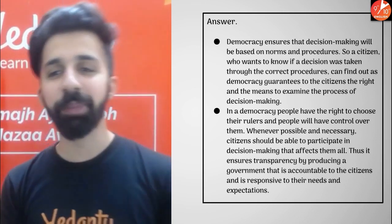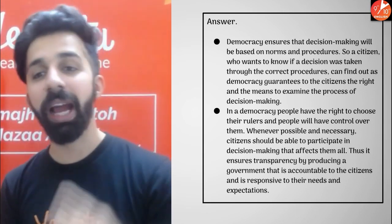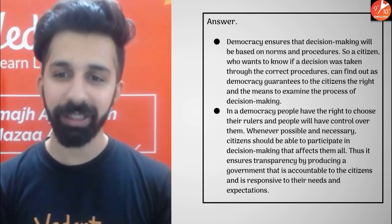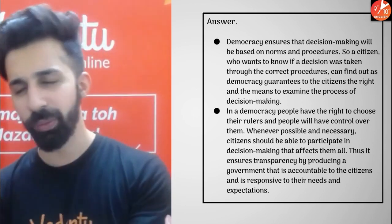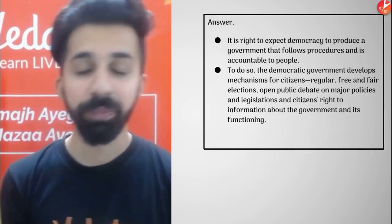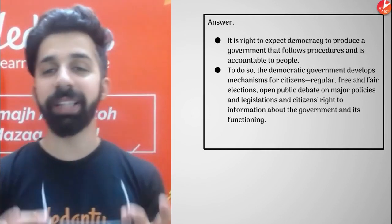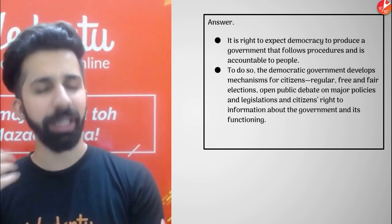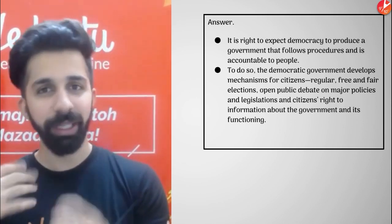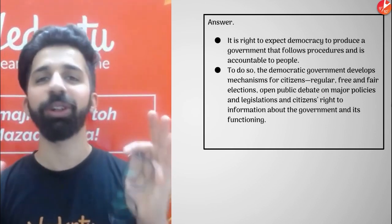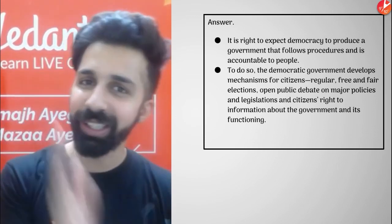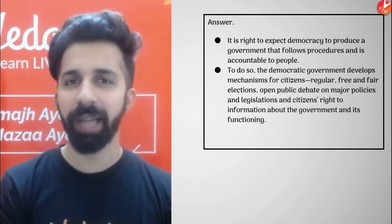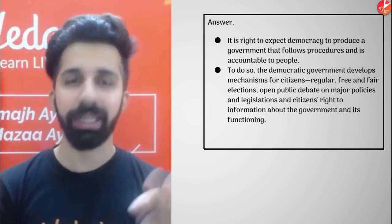Second, in a democracy, people have the right to choose their rulers and people have control over them. Whenever possible and necessary, citizens should be able to participate in decision making that affects them all — like voting, for example. Next, it is the right to expect democracy to produce a government that follows procedures and is accountable to the people. Democratic structures should be accountable, responsive, and legitimate.